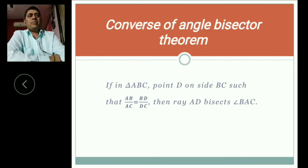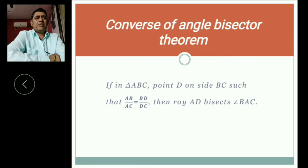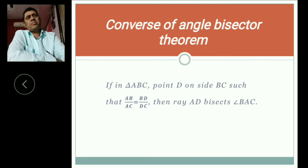The next is converse of angle bisector theorem. If in triangle ABC, point D on side BC such that AB by AC is equal to BD by DC, then AD bisects angle BAC. We learn from this figure. Start theorem, then theorem. Converse theorem. Some problem.